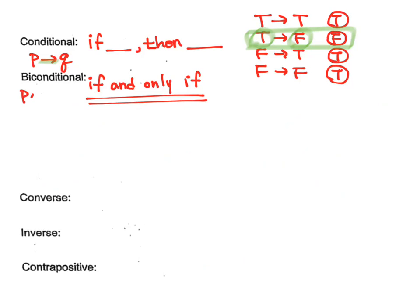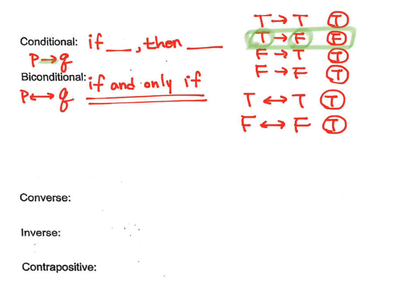Symbolically, I have an arrow but it's a double-sided arrow. That means both of them have to be the same. So true if and only if true would be okay — that's true. False if and only if false is still true as long as they're the same. But if they're different, it's going to be false. True if and only if false is false, and false if and only if true is still false.